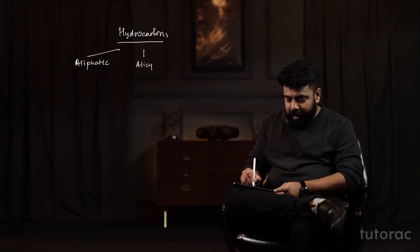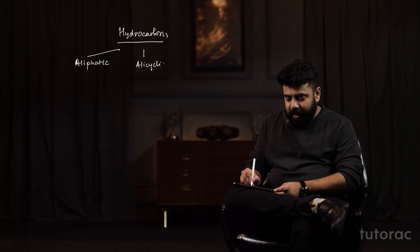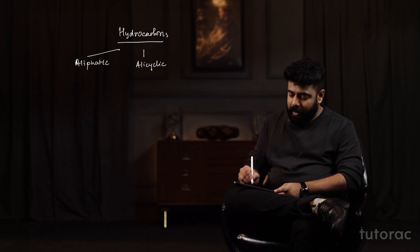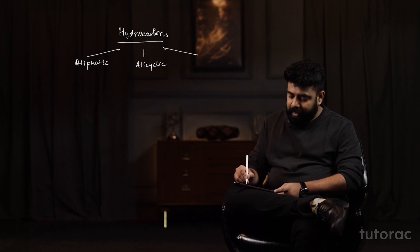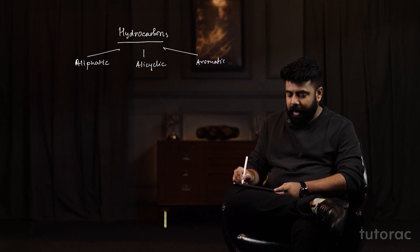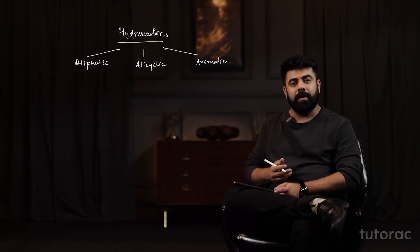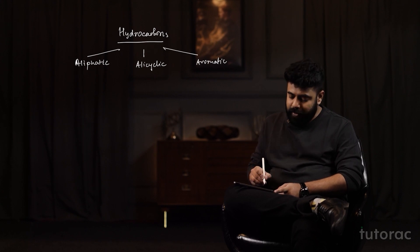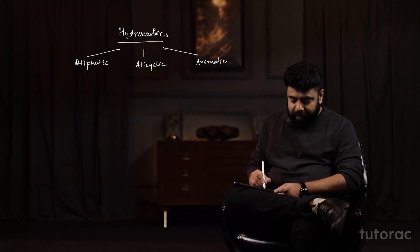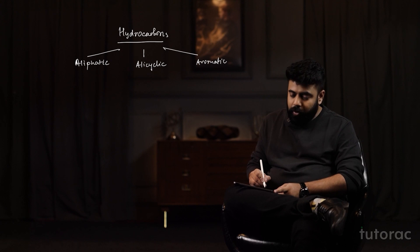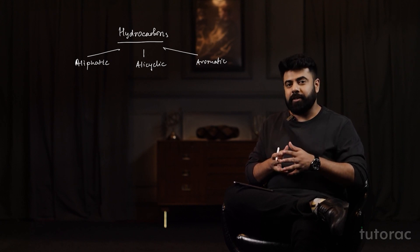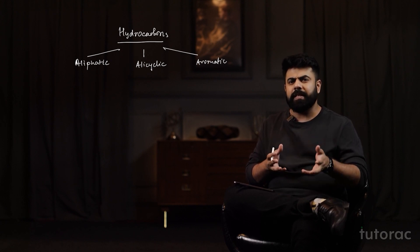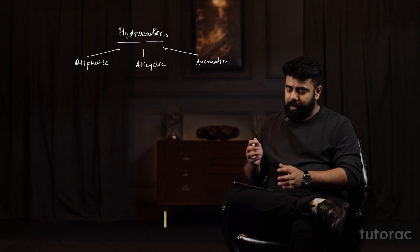The other type is called alicyclic hydrocarbons. After alicyclic hydrocarbons, we have the third type, which is called aromatic hydrocarbons. Aliphatic hydrocarbons can be classified into saturated and unsaturated, which means alkanes, alkenes, and alkynes.